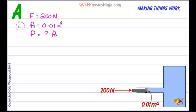Now we've done our data list. We need to find an equation which links force, area and pressure and the equation is pressure equals force divided by area.